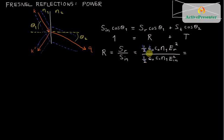The one-halves are gone, epsilon naughts are gone, C naughts, and even the N1s are gone. We just have the ratio of the fields, and that's in fact equal to R squared, little R squared. And this would be true for S polarized light or P polarized light.